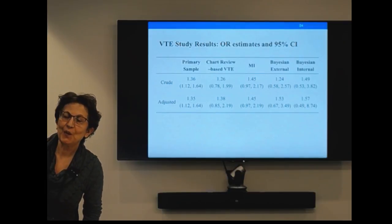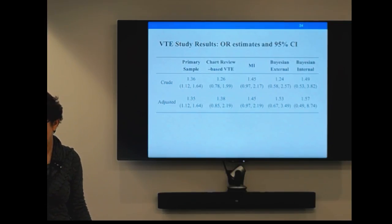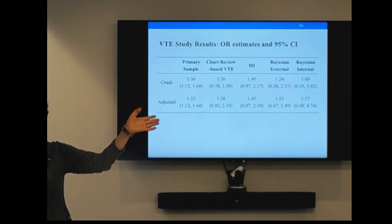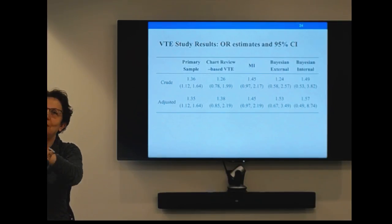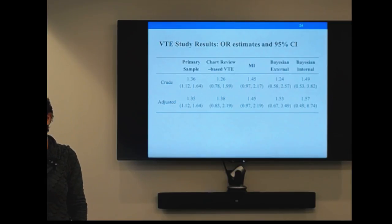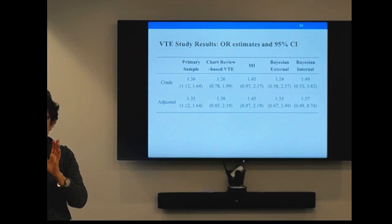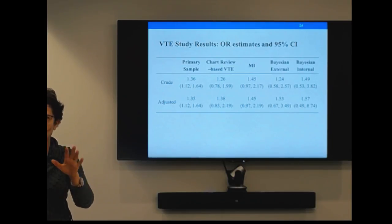Consider: you have 10 papers on the risk of anticoagulants. One says the risk is twice as high, another says 30% lower, a third says no risk. What's going on? It's misclassification in the data. RAMQ is actually less misclassified than other countries' databases, where people move in and out leaving data gaps. At least here you don't have that problem.